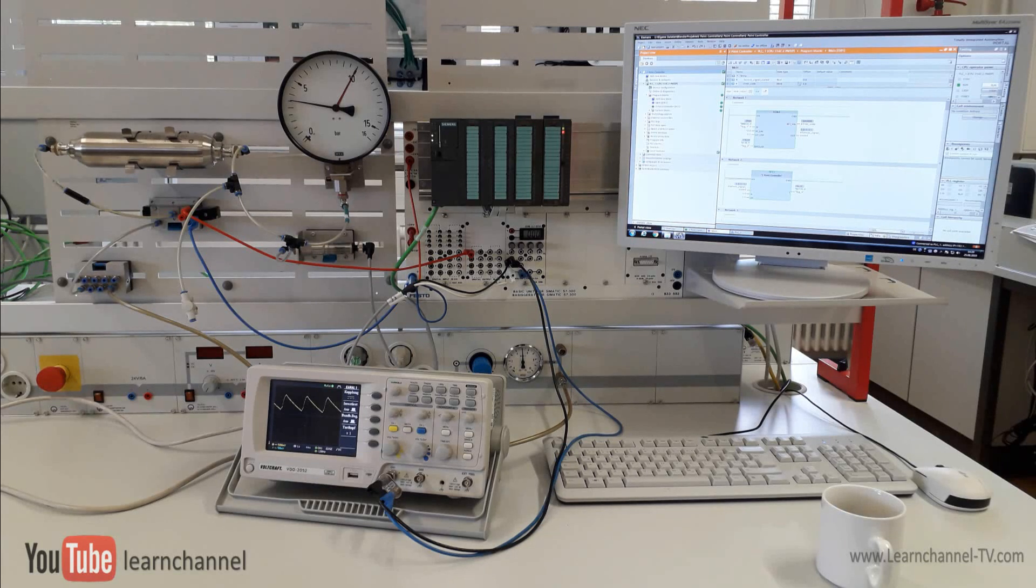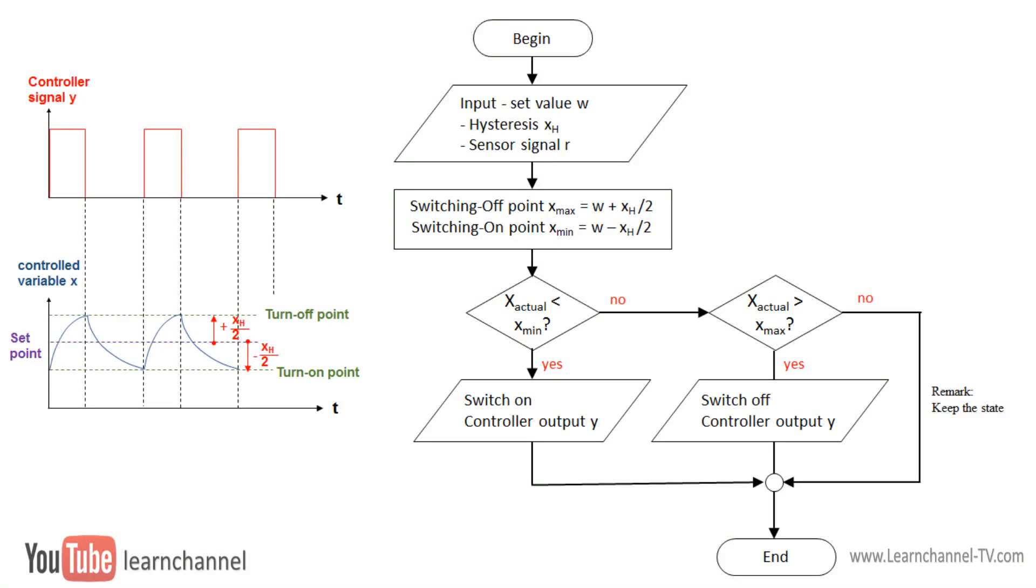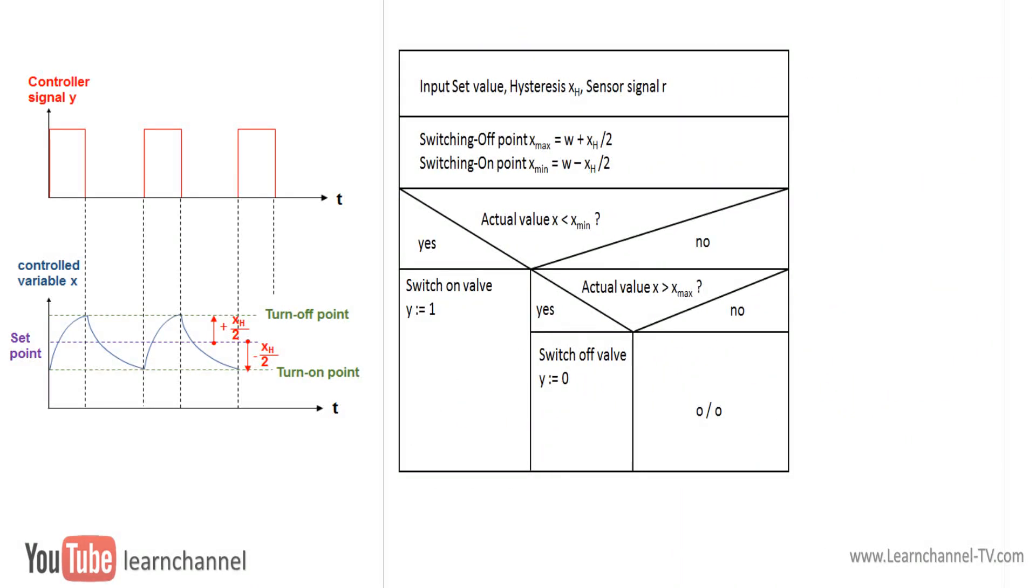The first step in programming is to create a plan about how the program should work. One possibility is called the flowchart. The turn on and turn off point can be calculated from the parameter set point and switching hysteresis. Compare the actual value with the turn off and on points and you can then decide if the valve should be turned on or off. However, the disadvantage of the flowchart is that it tempts to program jumps. Therefore, another option would be to use the Nassi-Schneider diagram.